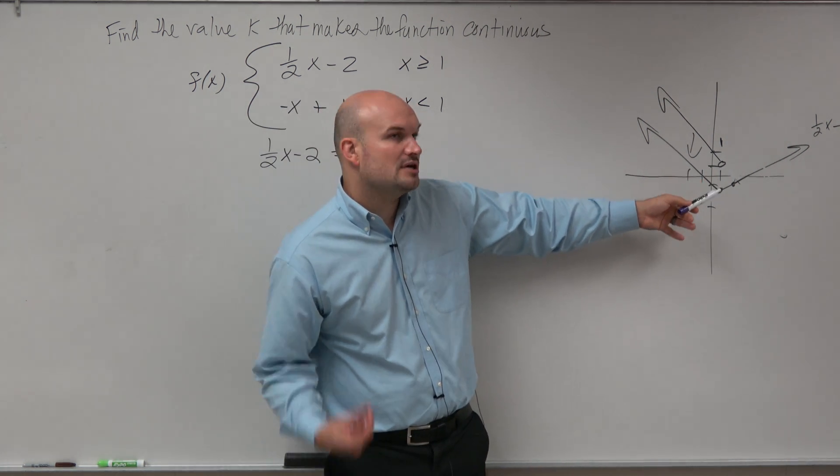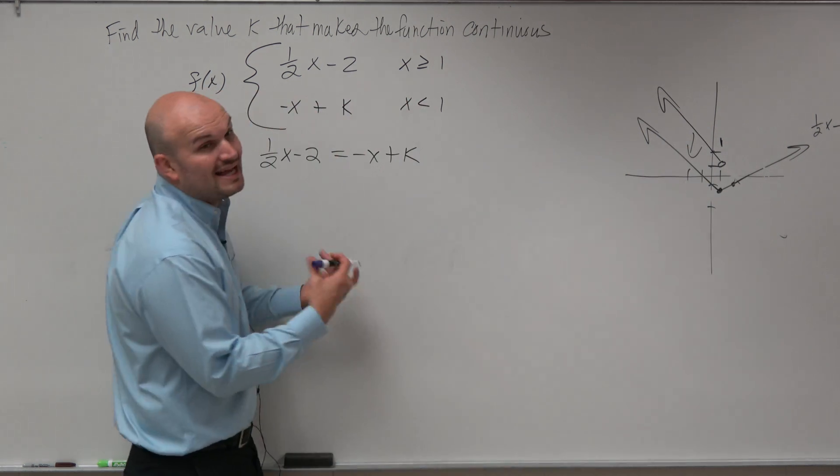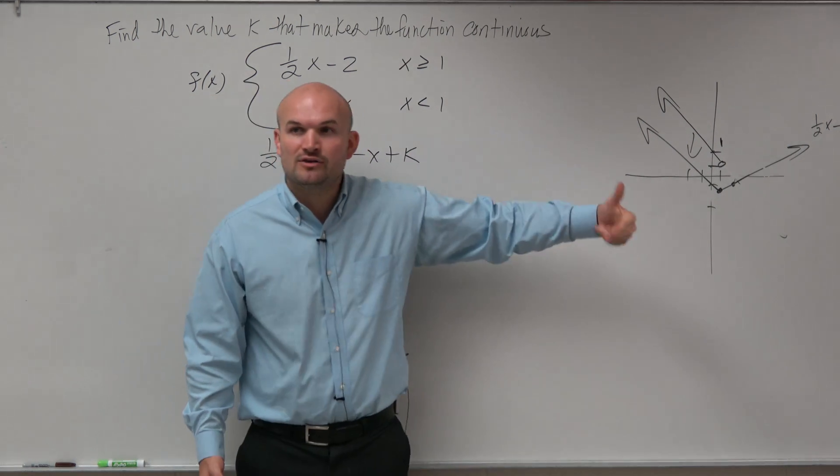Assume you don't know the y value. What x value are we trying to make them equal to each other? Now again, negative 2 is the y value, but there's nothing for y. At what x value are they trying to meet at?